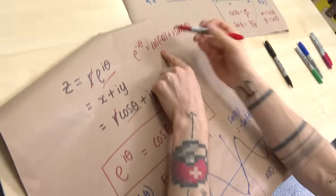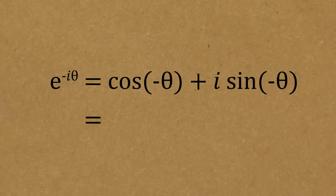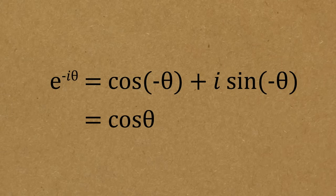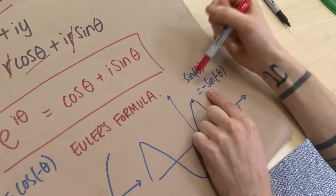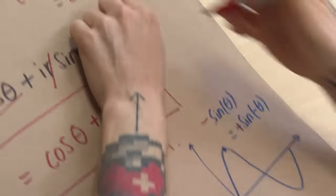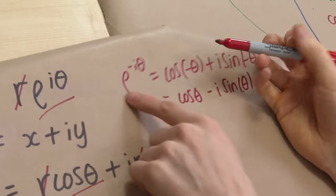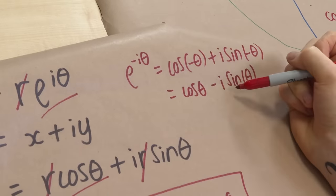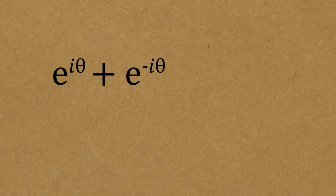Since cosine is even, cos(−theta) equals cos(theta). Since sine is odd, sin(−theta) equals minus sin(theta), giving minus i·sin(theta). So e to the minus i·theta equals cos(theta) minus i·sin(theta). Comparing this with Euler's formula, we can add the two equations together: e to the i·theta plus e to the minus i·theta.